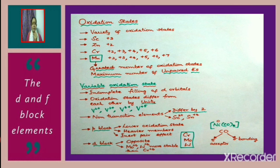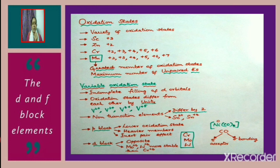In the case of p-block elements, as we move down the group, the stability of the lower oxidation state increases — the heavier members exhibit lower oxidation state. This is due to the inert pair effect. Whereas in the case of d-block elements, it is just the opposite: the higher oxidation state becomes more stable. This is why, considering chromium, molybdenum, and tungsten, molybdenum and tungsten show +6 oxidation state which is more stable than Cr⁶⁺.